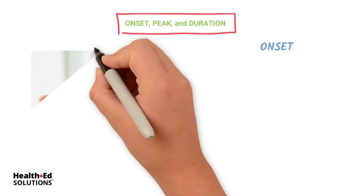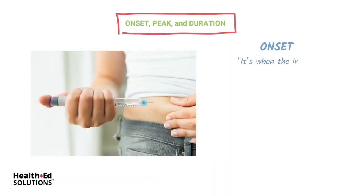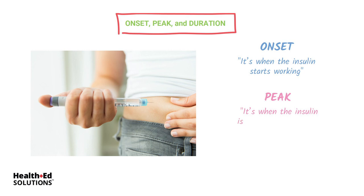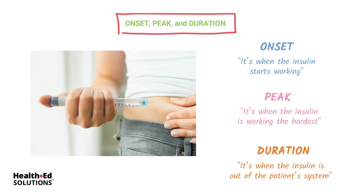Let's talk about three key terms. The onset is when the insulin kicks in — that's when it starts working. The peak is when the insulin is working the hardest, fighting hyperglycemia at its peak level with the strongest punch. And the duration is basically when the insulin is out of the patient's system.